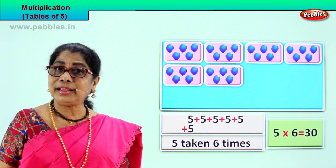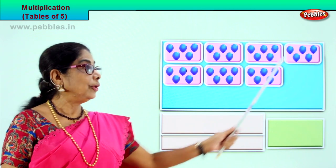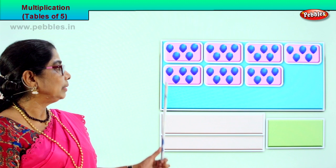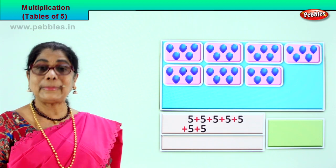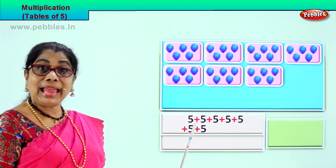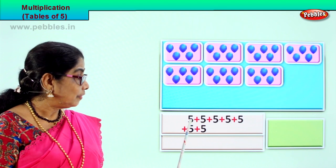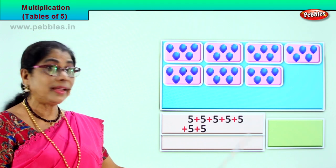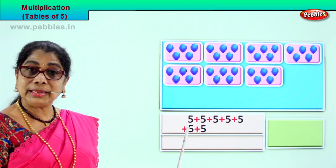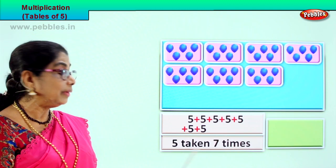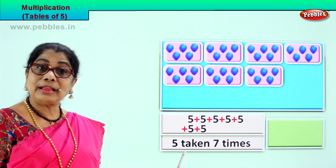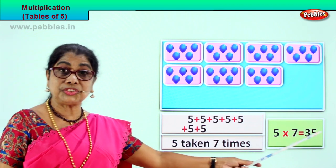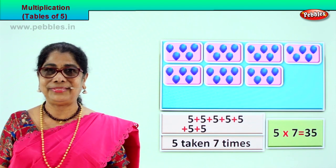Let's look at another grouping of five — one, two, three, four, five, six, seven. There are seven groupings of five. How many times five taken? Seven times. Multiplication is repeated addition. So we will add five seven times: five plus five, ten. Plus five, fifteen. Plus five, twenty. Plus five, twenty-five. Plus five, thirty. Plus five, thirty-five. Five into seven is thirty-five. Five sevens are thirty-five. Very good.